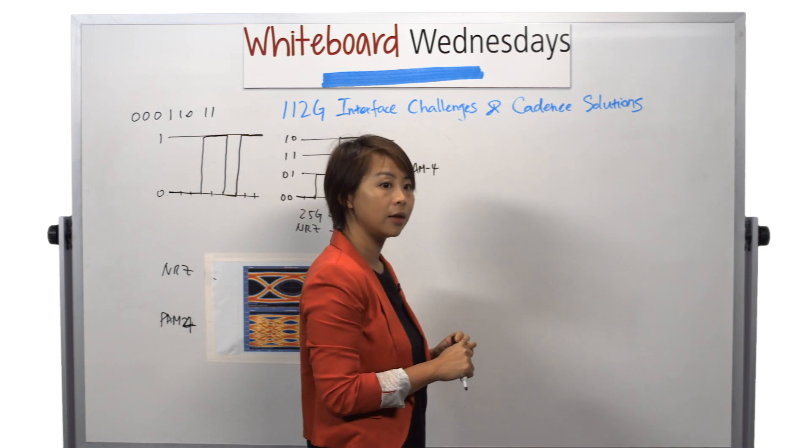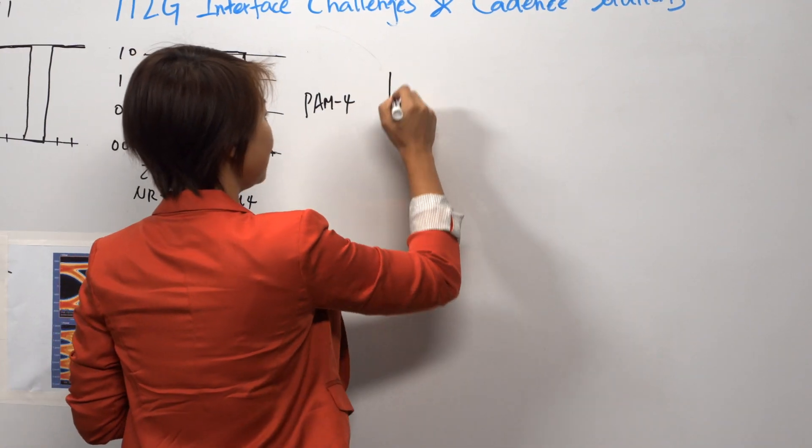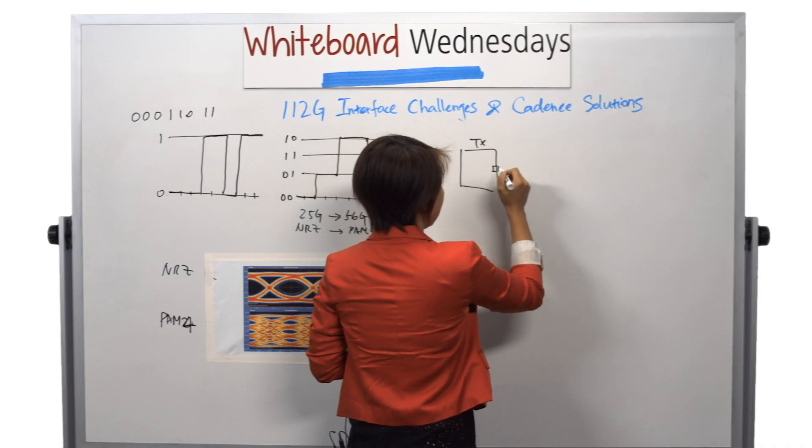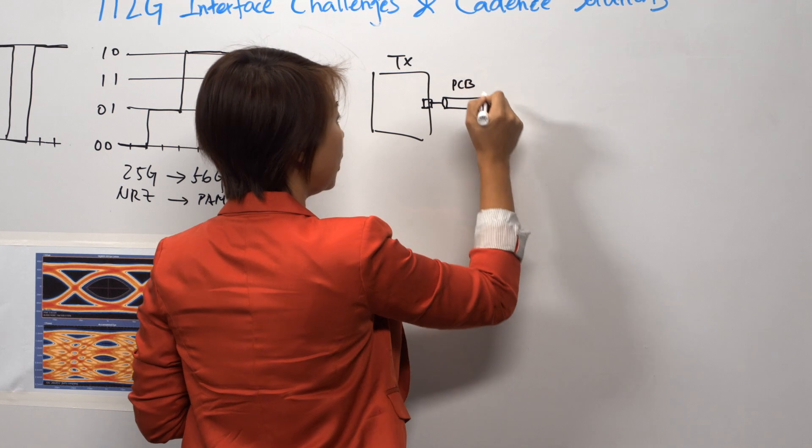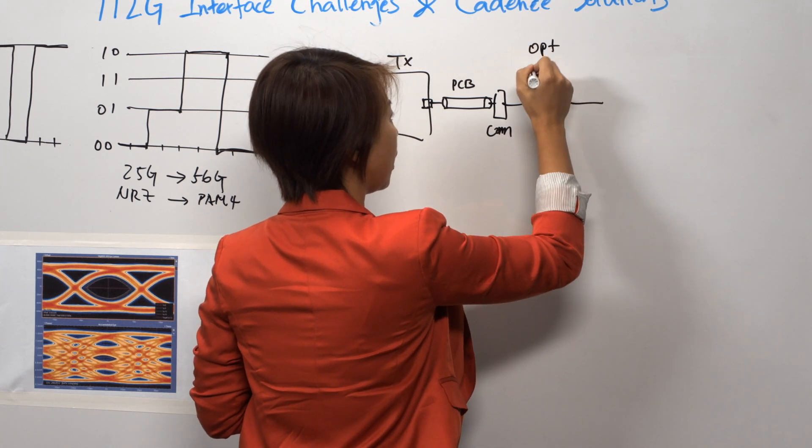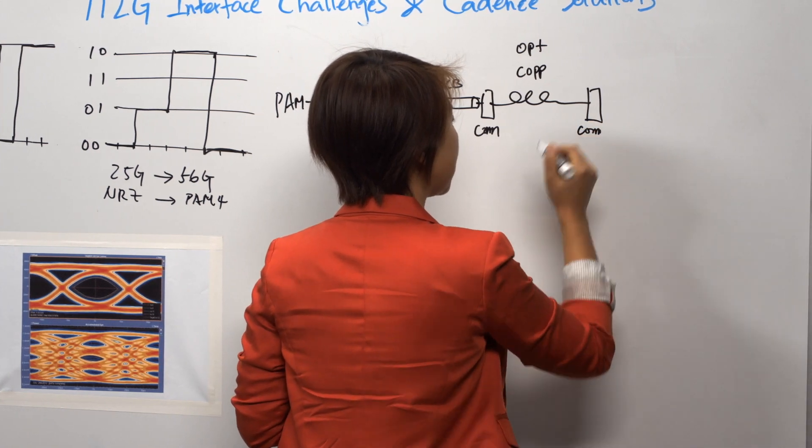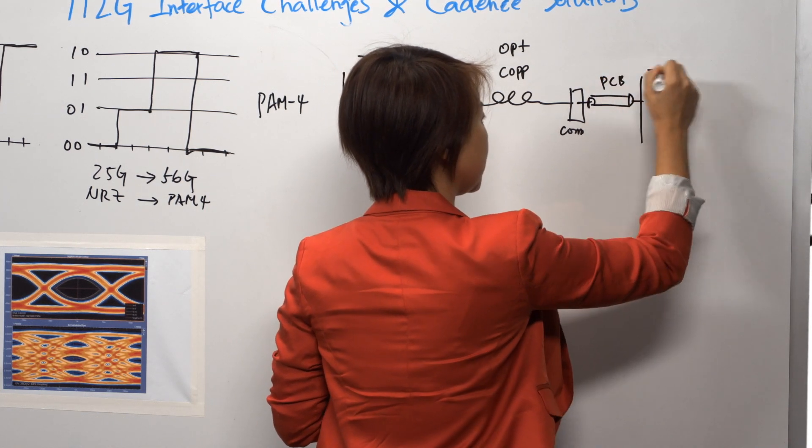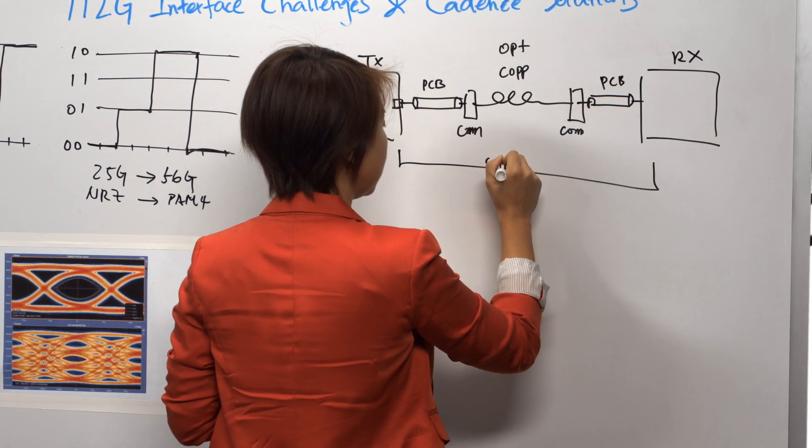So this is one challenge. Let's look at the next challenge, the channel. A typical switch to server channel is like this. You have a transmitter residing in one side of ASIC. The signal goes through the pad over a certain length of PCB on the board, and then it goes through a connector to either an optical link or a copper link. On the other side of the link, the signal will need to go through another connector over another trace, PCB trace, and then essentially arrive at the receive end. So this whole thing is the channel.